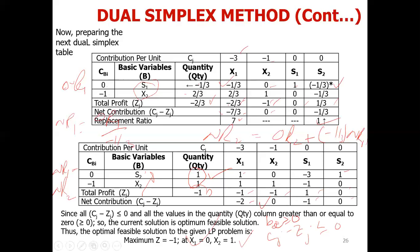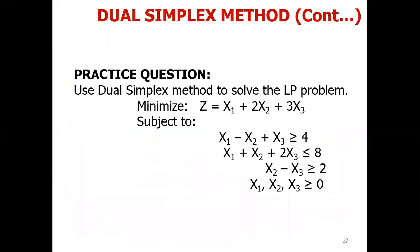I hope you understand how we can solve a linear programming problem using the dual simplex method. For practice, you can do this question: it is a minimization problem, so we will convert it to a maximization problem, and this constraint we will multiply by minus one as needed. The rest of the process is the same. Thank you so much.